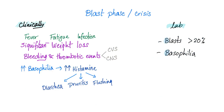In the blast phase or blast crisis, clinically speaking, you have a patient with fever — usually unexplained — fatigue, as well as infection. Significant weight loss. Some platelet abnormalities could cause bleeding or thrombotic events, such as thrombi or strokes. Increased basophilia will lead to increased histamine release, leading to pruritus — which is a fancy word for itching — diarrhea, and flushing. In the lab, you'll find blasts greater than 20%, which is by definition acute leukemia, and you will have basophilia.